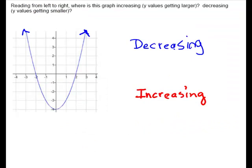Let's look at this next graph and answer the decreasing and increasing intervals. On the ends there were arrows, so we'll go with arrows — it goes on forever. So decreasing: this is going on forever to the left, so it's coming from negative infinity to 0. Then it's going to increase starting at 0, going forever to the right, so increasing is from 0 to infinity.